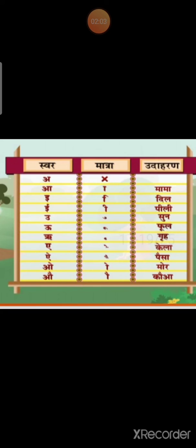E means Dirgh. So if we are using Vyajanakshar with E — Ka plus E — it will be Ki. Then U. Ka plus U — Ku. Next is Uu — Ka plus Uu — Ku.